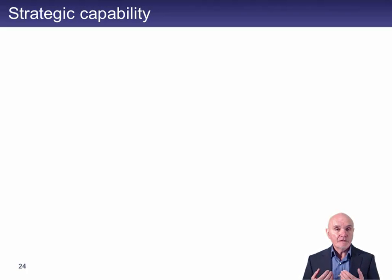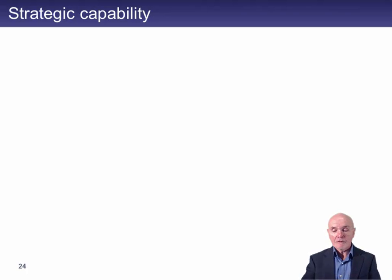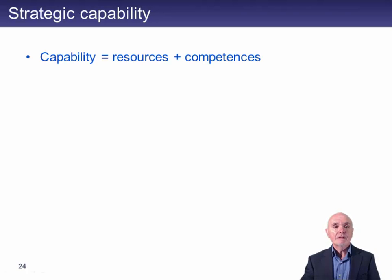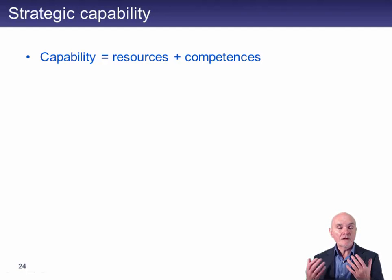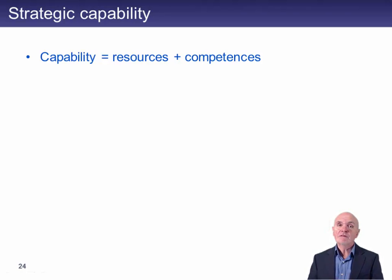What is the company or the organisation capable of? We have to think about what yields capability. The first element is that capability depends on both resources and competences. Think of a resource as a non-current asset — a machine. If I wanted the capability of building cars, I need a production line — that's the resource. But that would be useless without the competences to use those facilities productively, to design cars and to sell them.